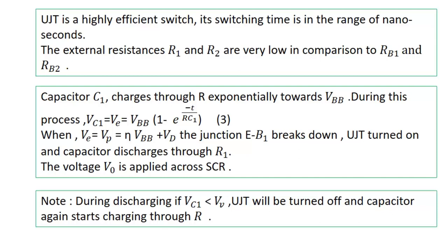The junction EB1 breaks down and the UJT will be turned on. Capacitor discharges through R1. The voltage V0 is applied across SCR. One point to be noted here is that after discharging, if the capacitor voltage is less than valley voltage VV, then the UJT will be turned off and again the capacitor will charge through R.